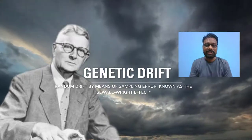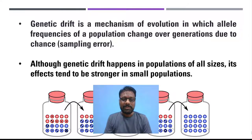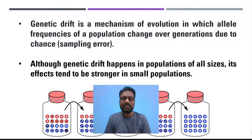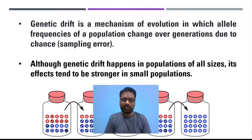What is genetic drift and how does it operate in the evolution process? Basically, genetic drift is a mechanism of evolution in which allele frequencies of a population change over generations due to chance. This is what we generally call a sampling error. This is not an adaptation, but by chance there is a change in the frequencies of the population which leads to a kind of drift from the main population.